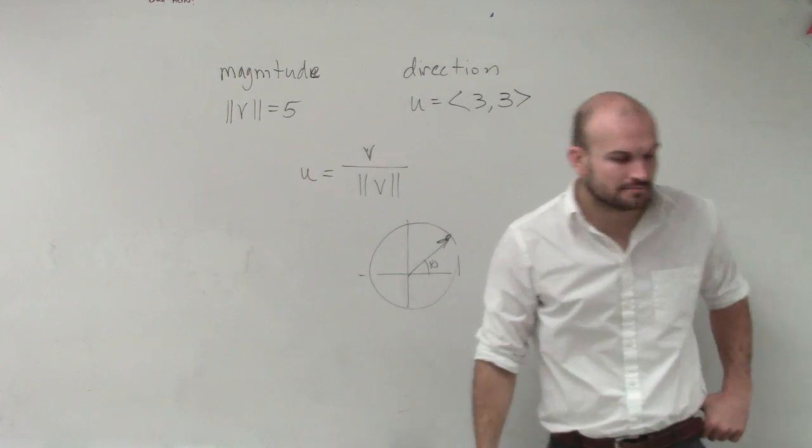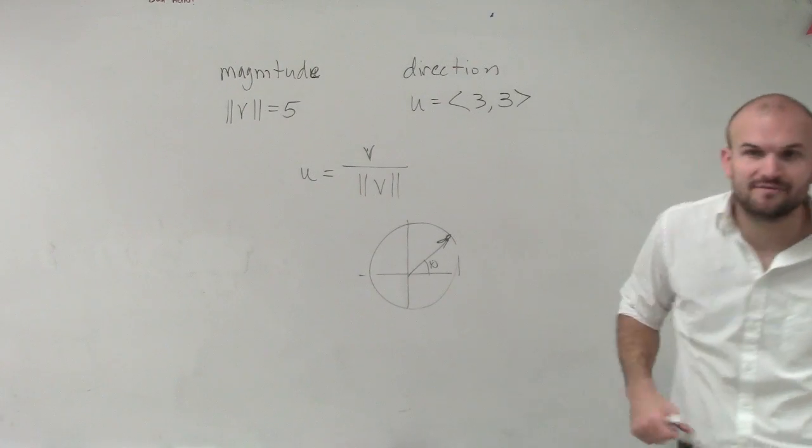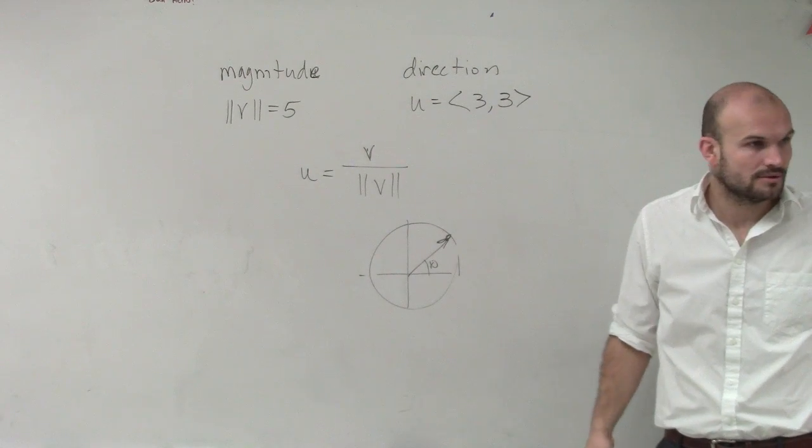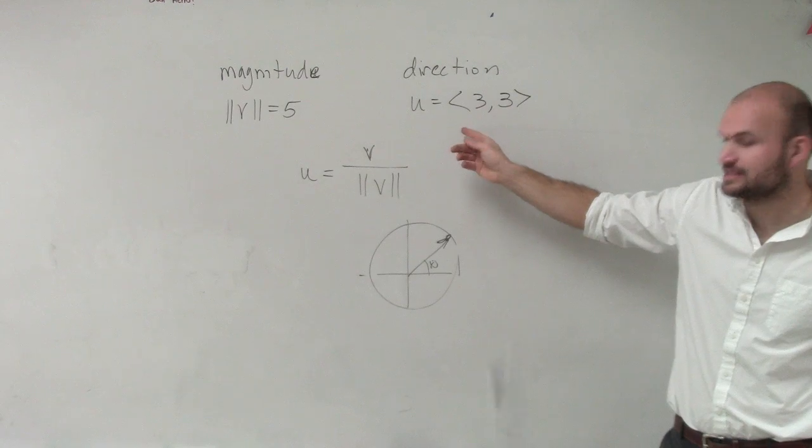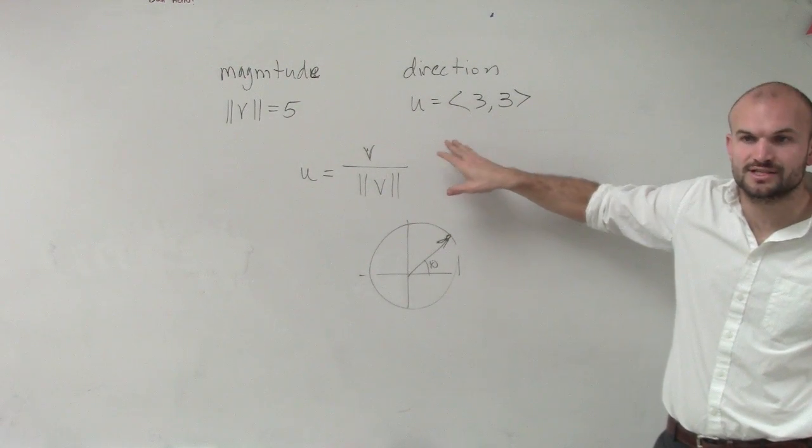We have a magnitude of 5, but what I have is I just have a vector <3, 3>. Now, is <3, 3> a unit vector? No, right? So what we need to do, because obviously the magnitude of this is not 1, is convert this to a unit vector.